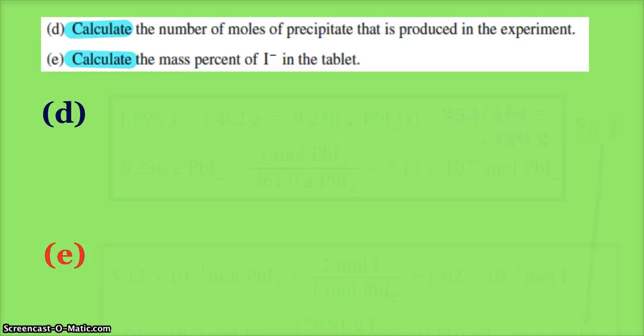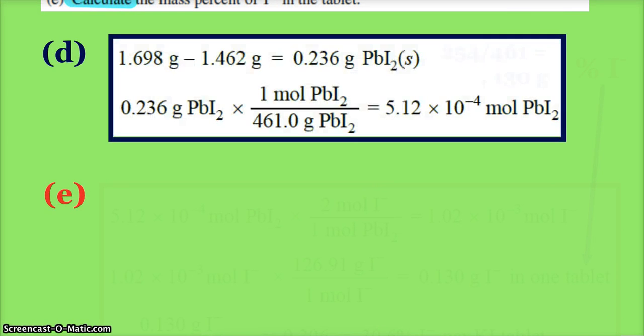So 1.698 grams is our dried filter paper with the precipitate, and we subtract out the mass of the filter paper. So I get 0.236 grams of my lead(II) iodide, PbI₂.